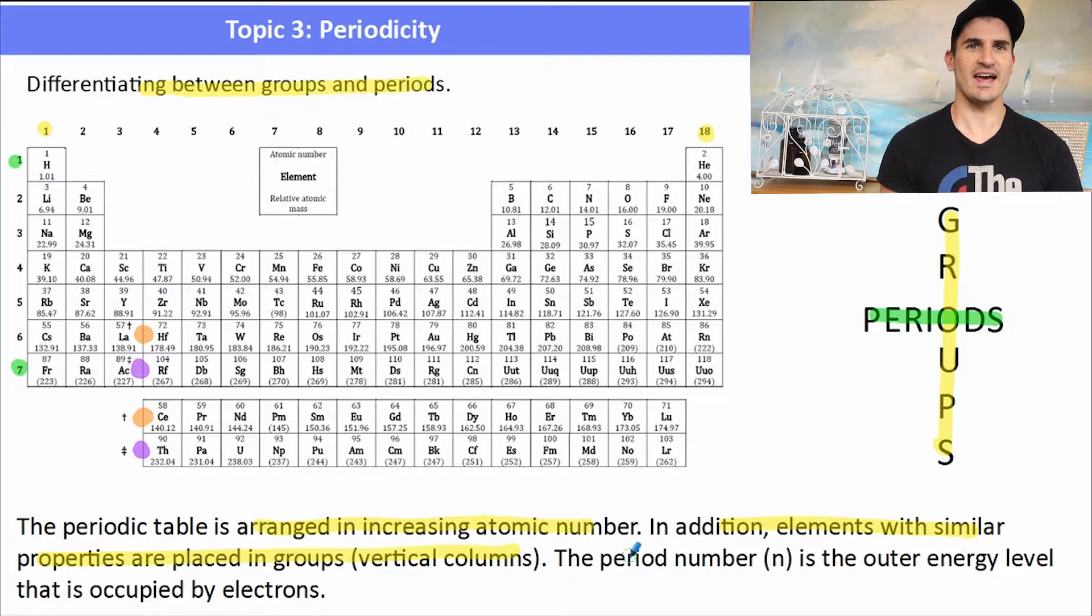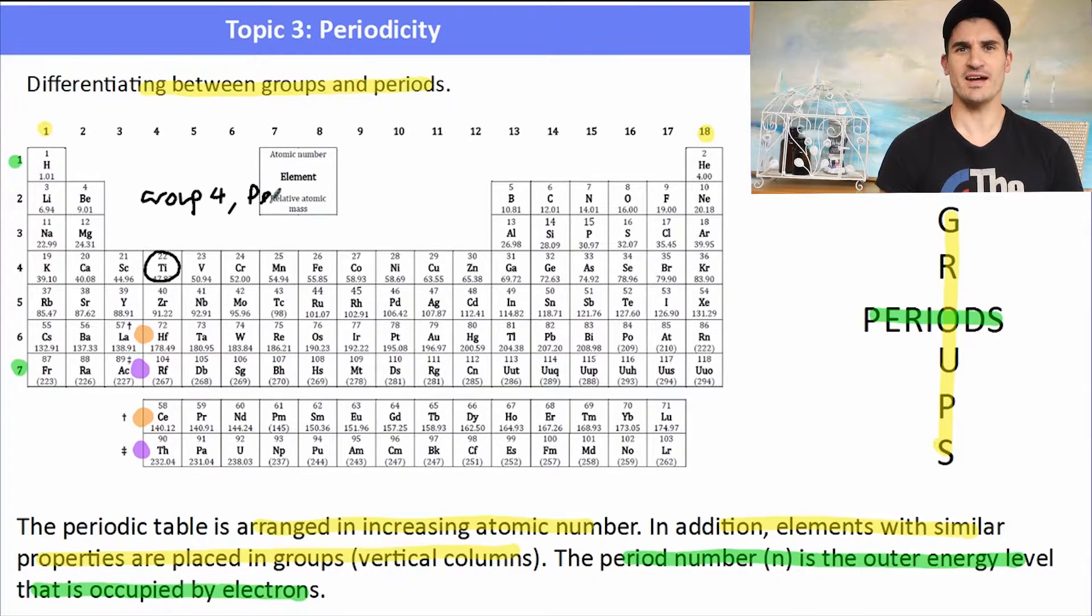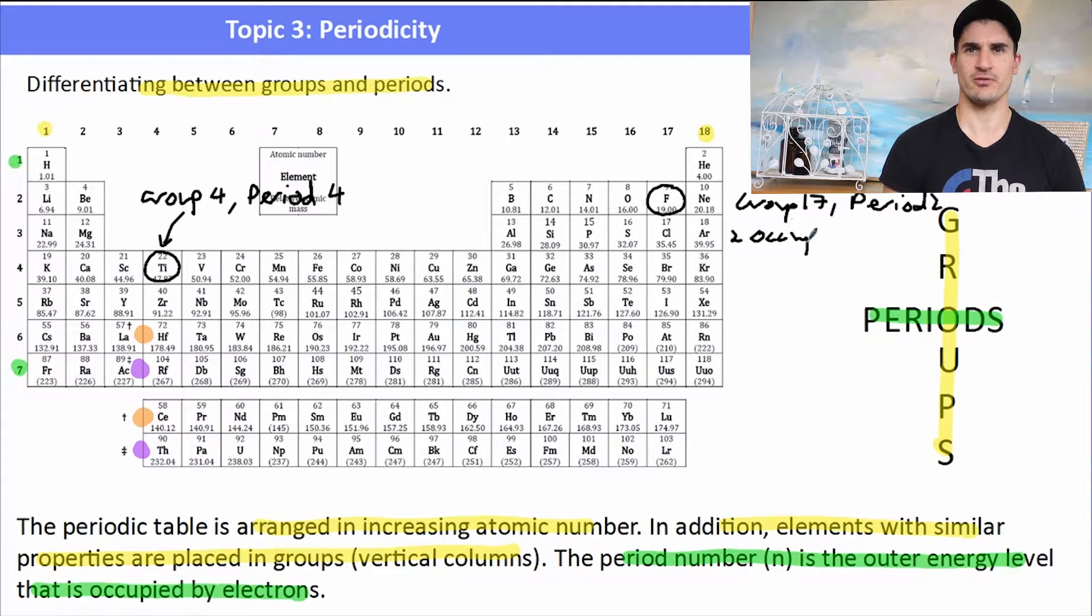Labeled, the period of an element is the outer energy level that is occupied by electrons, so it tells you how many shells this element will have. So if we take titanium, for example, it would be described as being in group 4 and period number 4, so its outermost electrons will be in the 4th shell, so it has 4 energy levels. If we take something like fluorine, fluorine would be in group 17, period 2, so it has 2 electron shells that are occupied with electrons, and it has 7 outer shell electrons because it is in group 17.